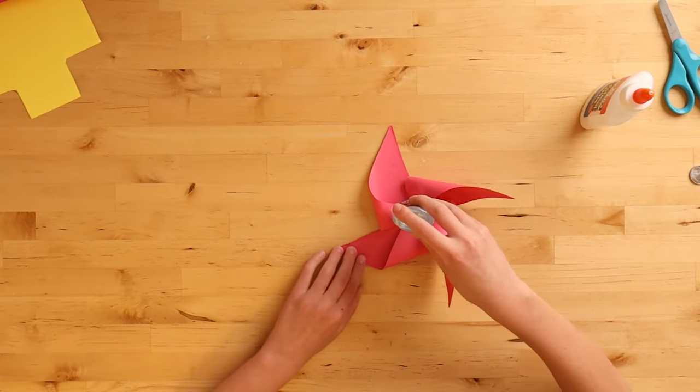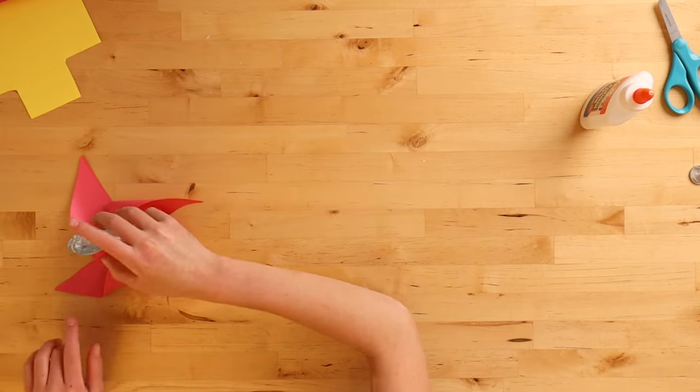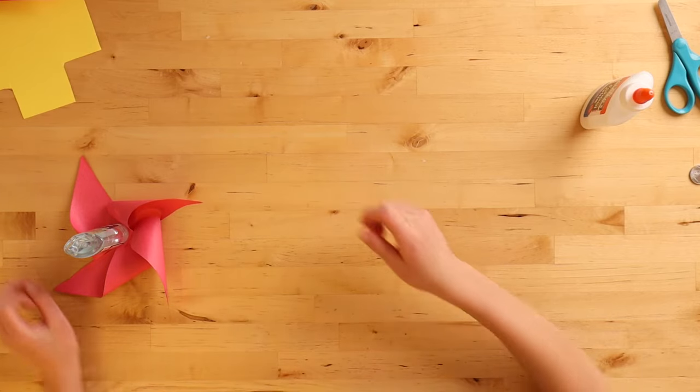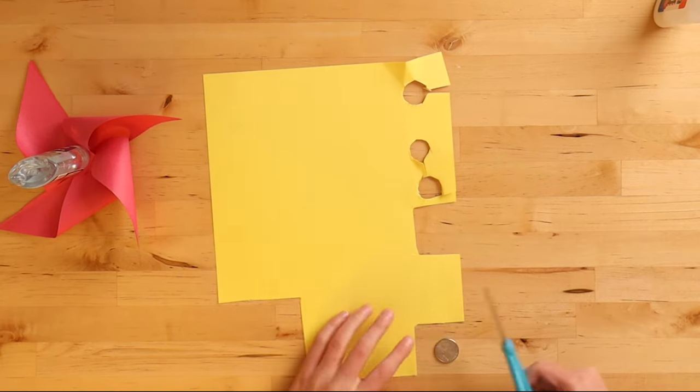You want to carefully move this to the side. And now we're going to cut the circle to put on top from the other construction paper. And we're going to need our coin for this and our scissors.